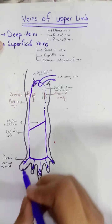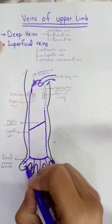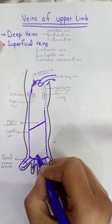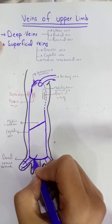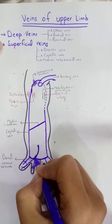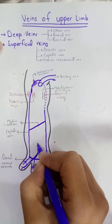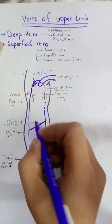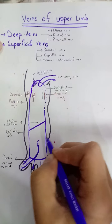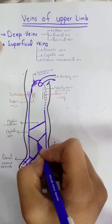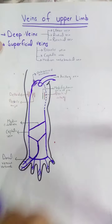The third vein is the median antebrachial vein. It arises from the dorsal vein of the dorsum of the thumb, then moves between the two veins. Its origin is very variable, but most commonly this is its pathway.